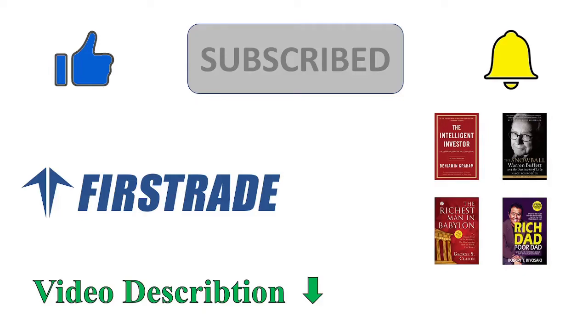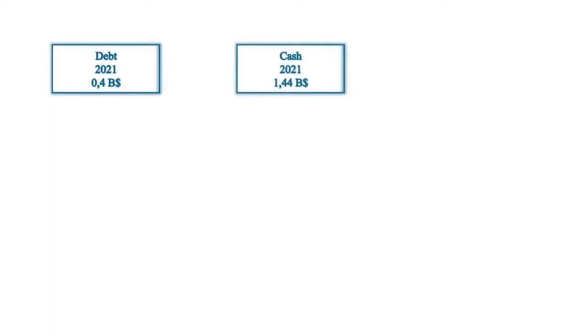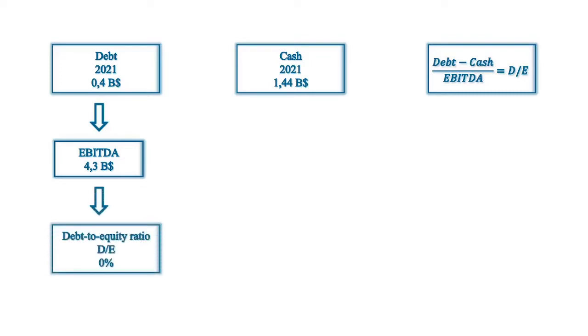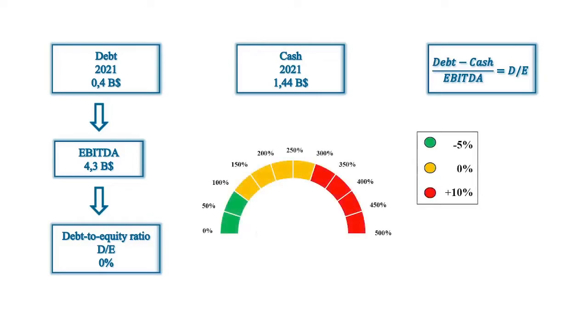Next I'll take a look at the debt situation. The company has a debt of $0.4 billion and has $1.44 billion in cash. When the cash gets subtracted from the debt and this value is divided by the EBITDA, the net debt to EBITDA ratio is found. The EBITDA is currently at $4.3 billion. Since the company has more available cash than debt, the ratio becomes zero automatically, telling us the company could pay off the whole debt at any time. This metric is inside the green section of the rating scale, and therefore I deduct 5% from the margin of safety.